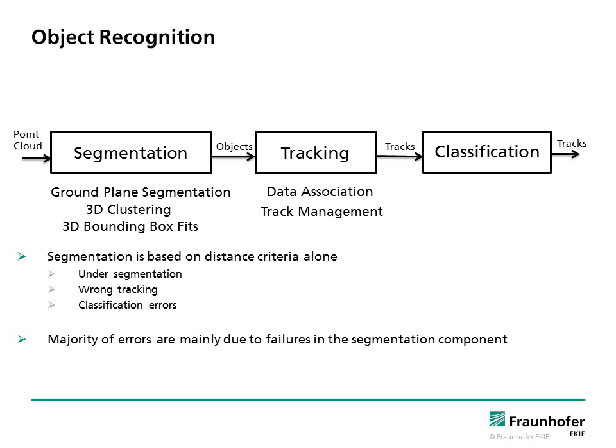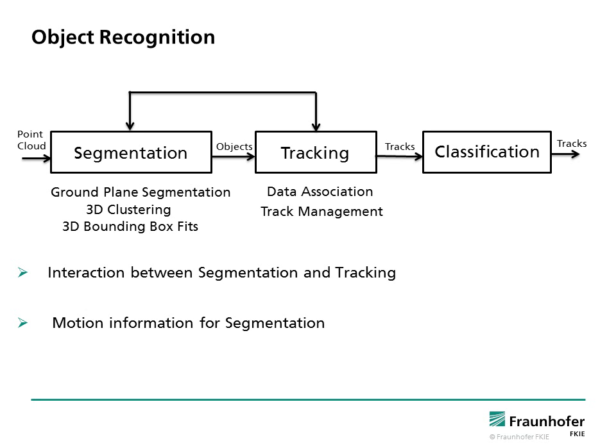Object recognition systems of autonomous vehicles perform the segmentation and tracking components independently. Therefore, segmentation is based on distance features alone. This usually results in under-segmentation of the environment, which means one segment can contain two or more objects. This leads to wrong tracking and classification errors when objects get closer.